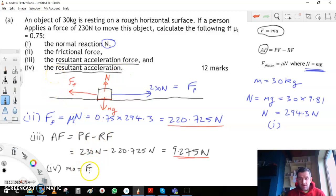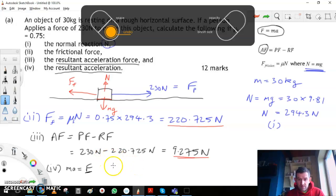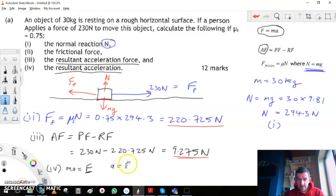So we have m times a equals our resultant force, or our resultant acceleration force. To get a, we divide both sides by m, so we get a equals F over m. And our resultant acceleration force there was 9.275, so that goes on top.